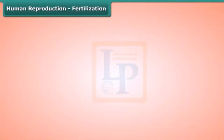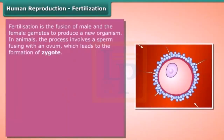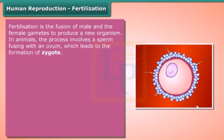Fertilization is the fusion of male and female gametes to produce a new organism. In animals, the process involves a sperm fusing with an ovum, which leads to the formation of a zygote.